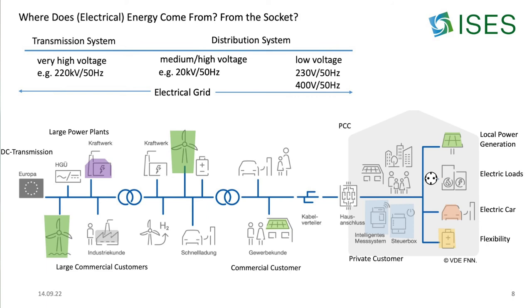In all these voltage levels we have power plants connected. Coming back to the initial question — where does electrical energy come from? — it depends: it depends on when you consume it and when others produce it. The easiest answer is it comes from your local power generation, if you're producing sufficient energy for your loads. But it can also come from commercial PV customers, wind plants, or somewhere else in Europe, depending on where electricity is produced, where the load is consumed, and at which time. This was the story of where electrical energy comes from and how the electrical structure behind my socket works. Thank you for your attention.